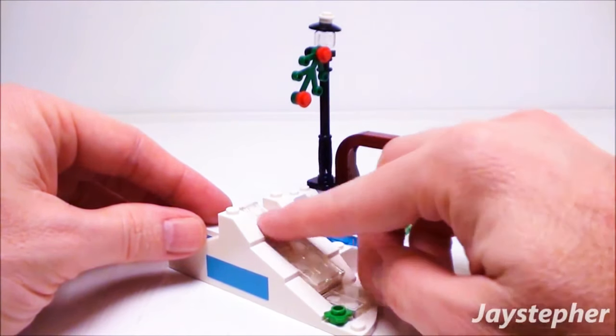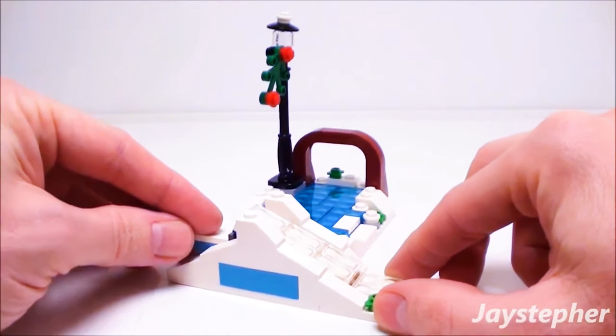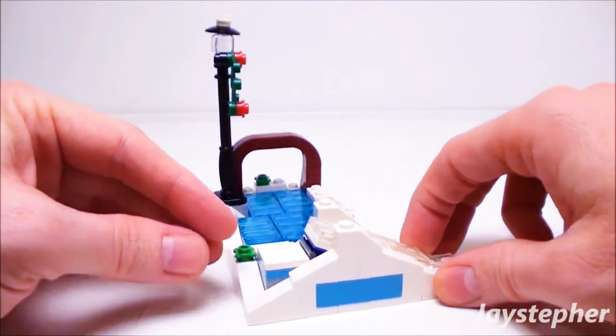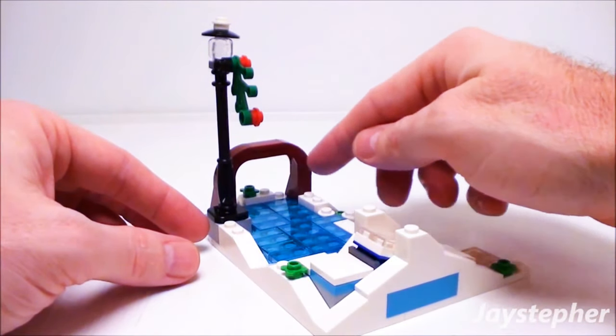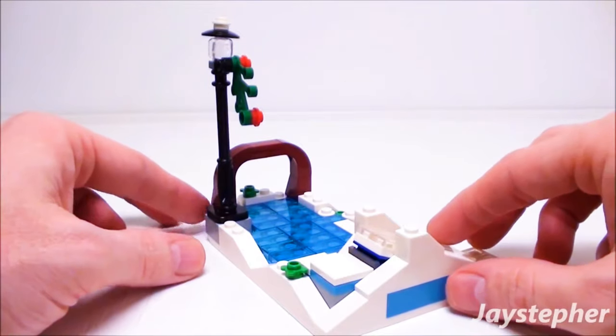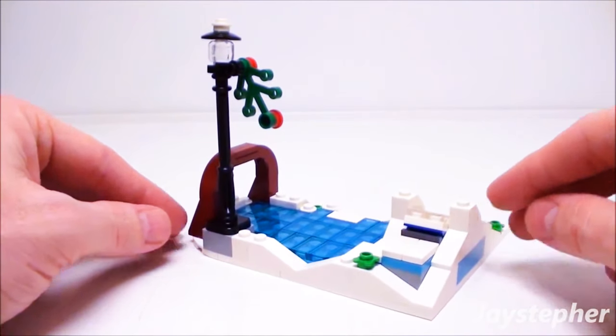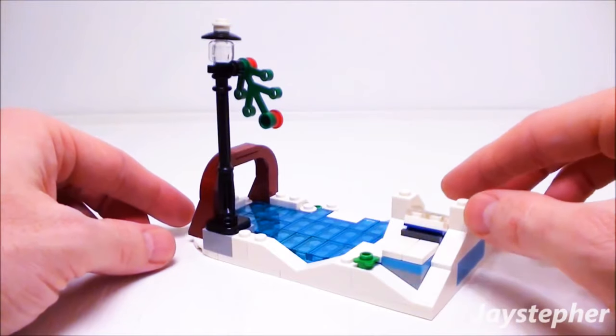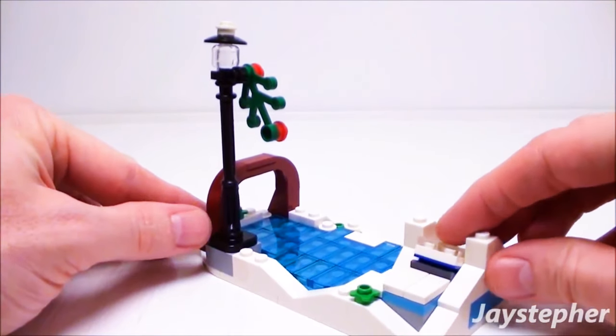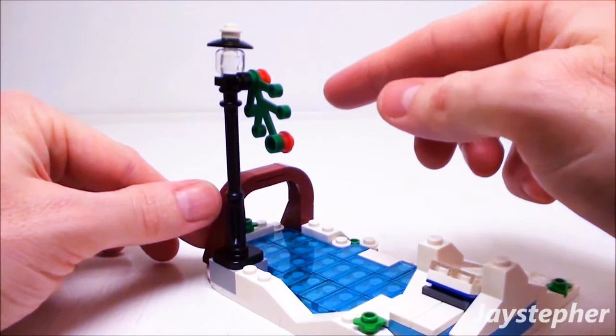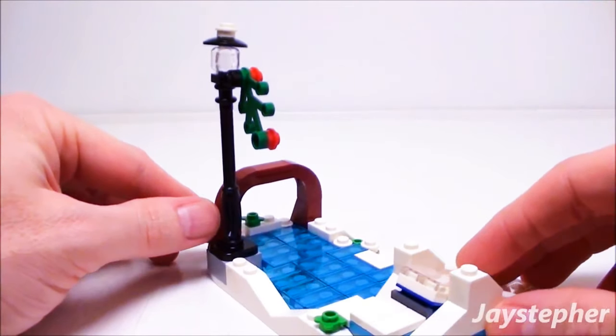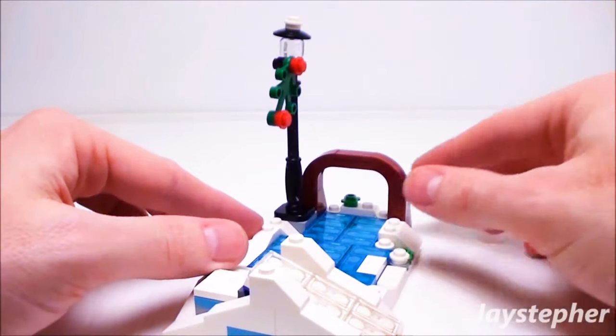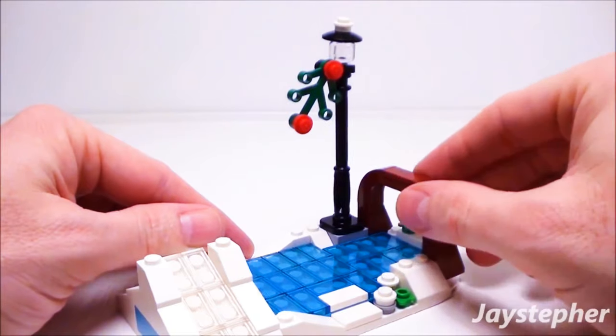Here we have the ramp for the sleigh. We have a goal for the ice hockey. We have some greenery peeking through the snow. Here we have a nice light fixture. Looks like some holly is attached to it.